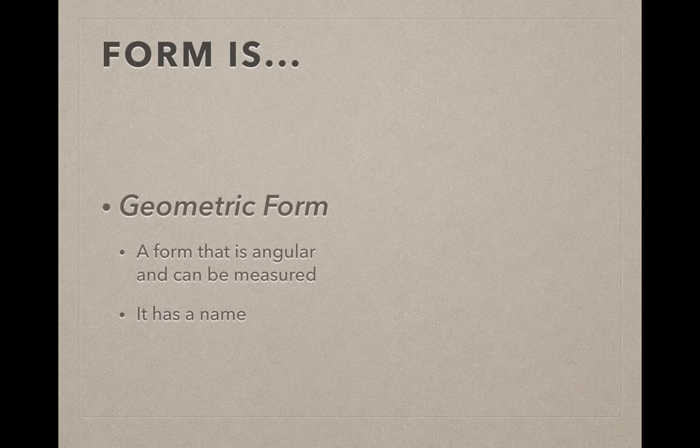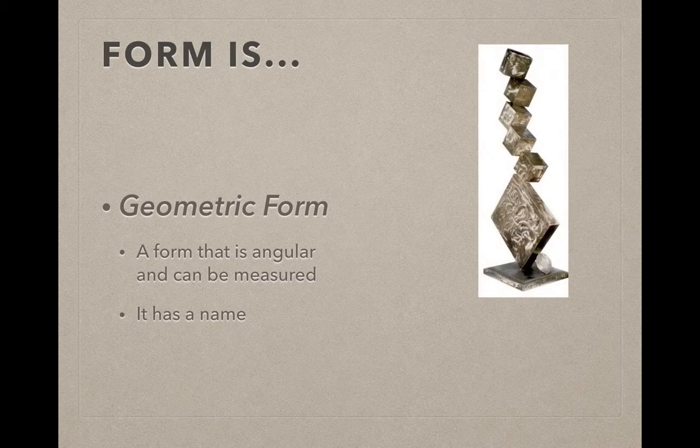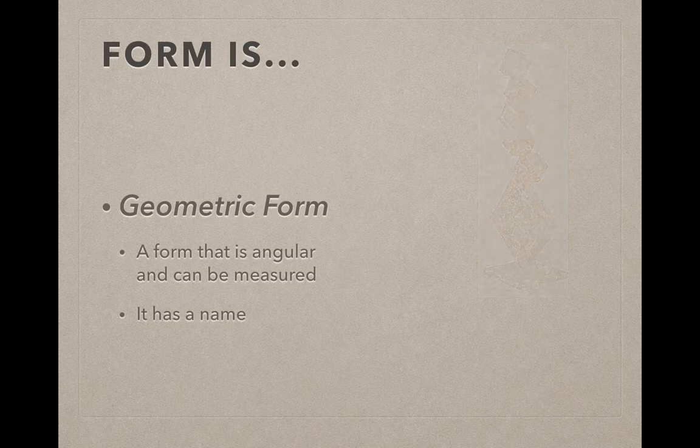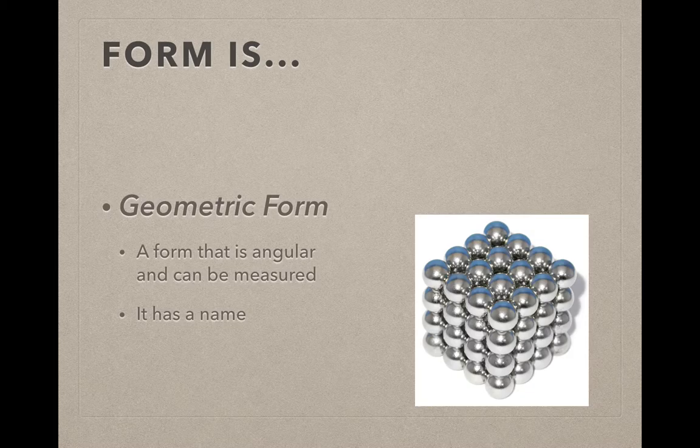Just like with shape, we can have geometric forms and we can have organic. Geometric forms are angular and can be measured. They usually have a name, so if you look at these sculptures you have cubes, you have elongated cubes, you have prisms, and in this last example you actually have spheres.